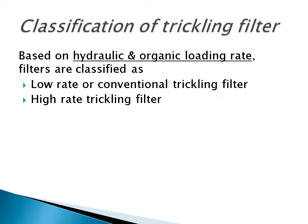The classification of the trickling filter is based on hydraulic and organic loading rate. There are two types: low rate trickling filter and high rate trickling filter. Another name for low rate is conventional trickling filter or standard trickling filter. Compared to the low rate trickling filter, the high rate trickling filter has a very high rate of filtration. Normally we use the high rate trickling filter.